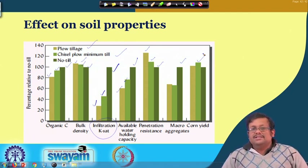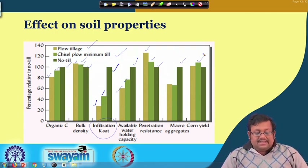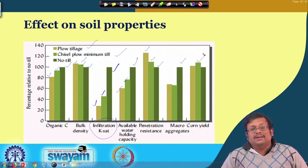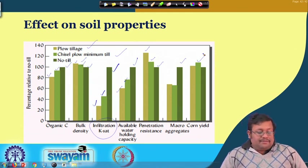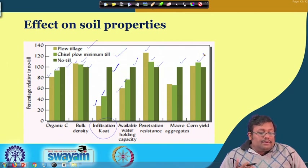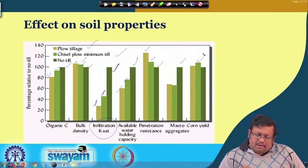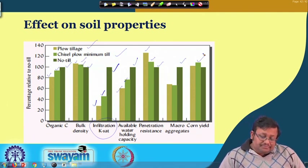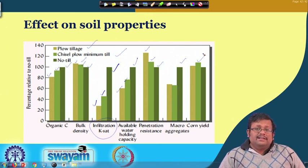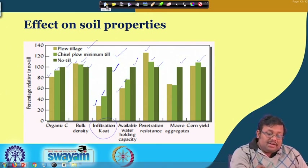Conventional tillage practice reduces organic carbon, increases bulk density, increases penetration resistance, and decreases available water holding capacity. Overall, there is always an increase in beneficial soil properties under conservation tillage practices compared to conventional tillage.